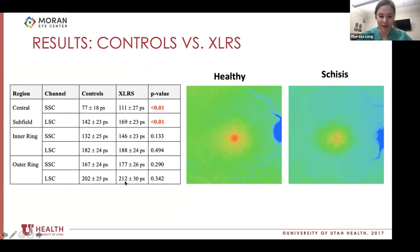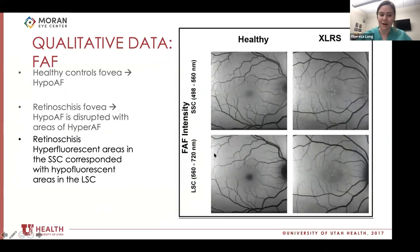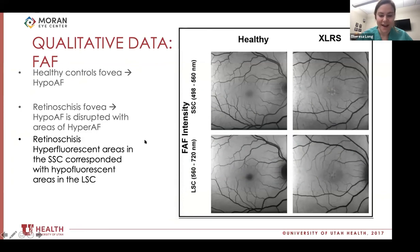Here you can see an example of healthy versus schisis. Looking at fundus autofluorescence for healthy individuals, they have a hypo-autofluorescence spot in the center visible in both the short and long spectral channels. In retinoschisis, the fovea where we would typically see this hypo-autofluorescence spot is disrupted with intermittent areas of hyper-autofluorescence. Interestingly, these hyper-fluorescent areas in the short spectral channel correspond with hypo-fluorescent areas in the long spectral channel — you can almost see a reversal.